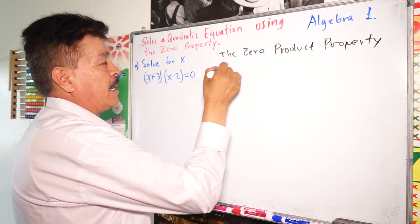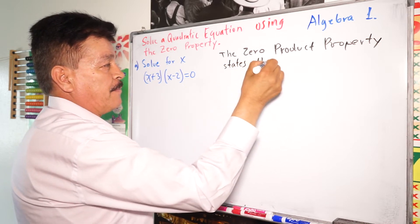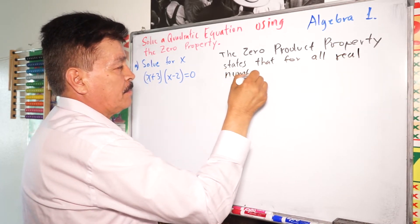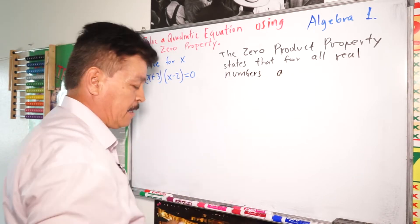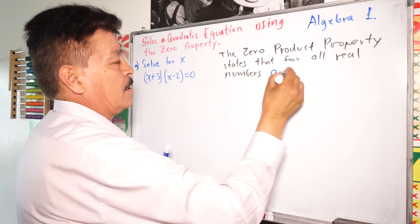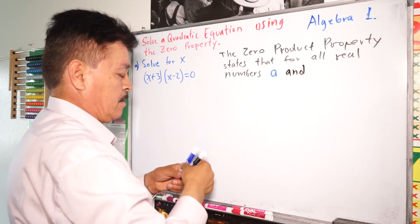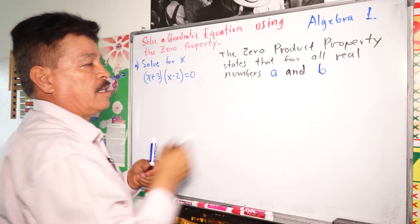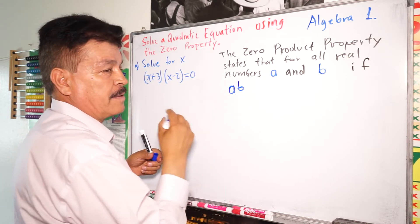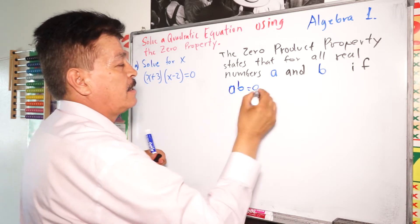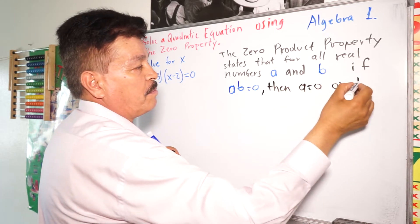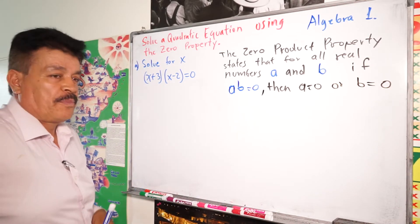The property says that for all real numbers a and b, if ab equals zero, then a equals zero or b equals zero. So that is the zero product property.